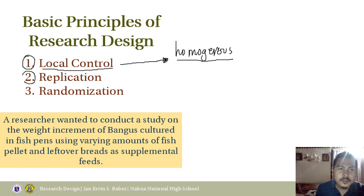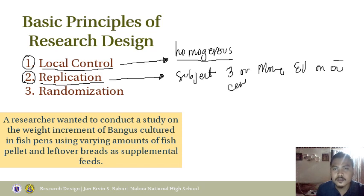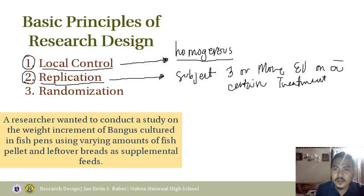Number two is replication. Replication means that you subject three or more experimental units (EU) to a certain treatment. By doing so, you are allowing yourself to have a set of valid data.